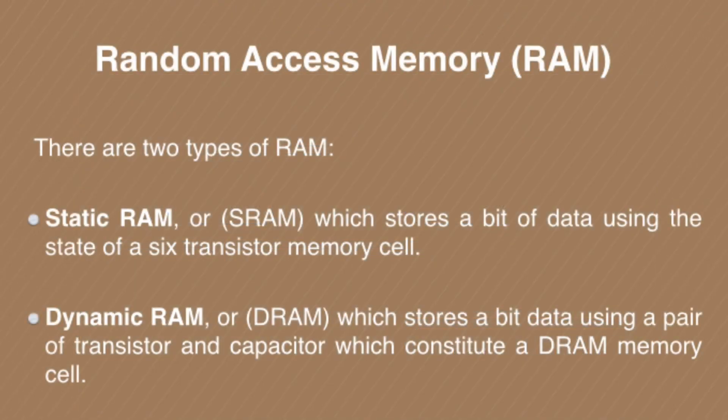We have seen what RAM — Random Access Memory — is. It is used with cache memory as well as with the primary or main memory. There are two types of RAM: Static RAM and Dynamic RAM.